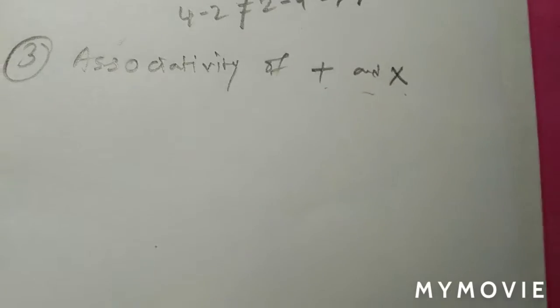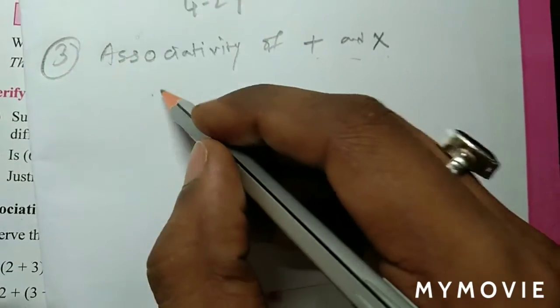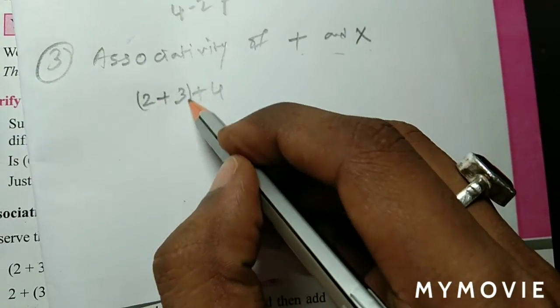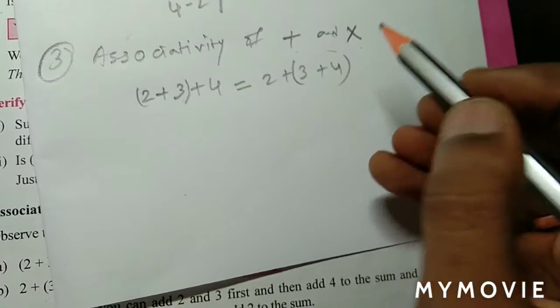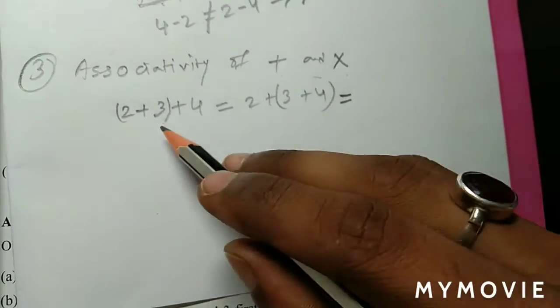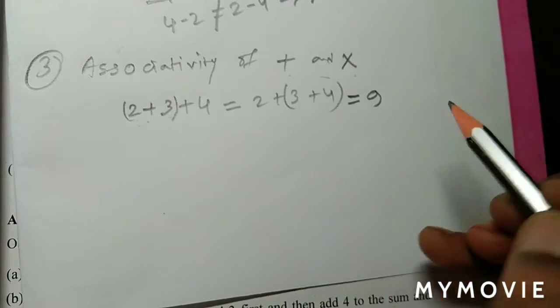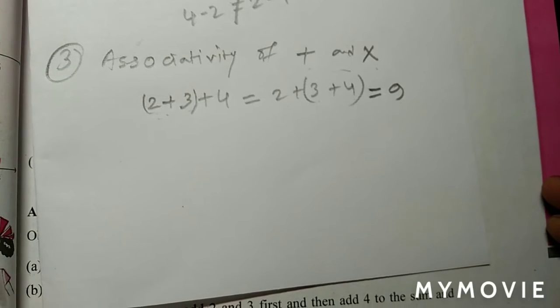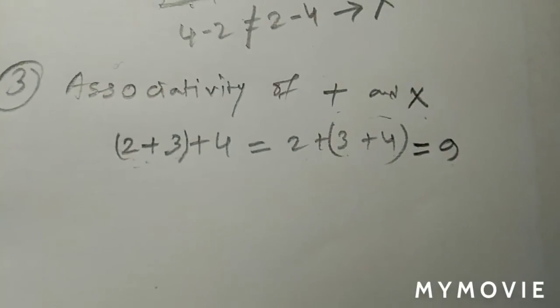Now we are discussing about the associativity of addition and multiplication. Associative property whole numbers पर बैठता है के नहीं — जैसे 2 plus 3 plus 4: first two numbers को group बनाओ तो (2+3)+4 = 5+4 = 9. Last two numbers को group बनाओ तो 2+(3+4) = 2+7 = 9. दोनों का result same 9 आया। So associative law of addition for whole numbers holds.